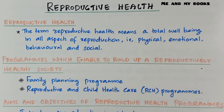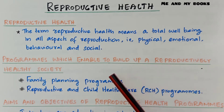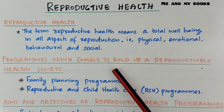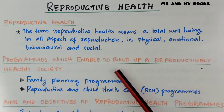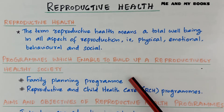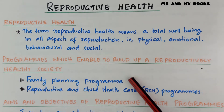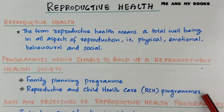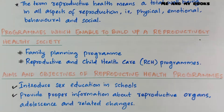Programs which enable us to build up a reproductively healthy society include family planning programs and reproductive and child health care, or RCH programs, launched by the government.